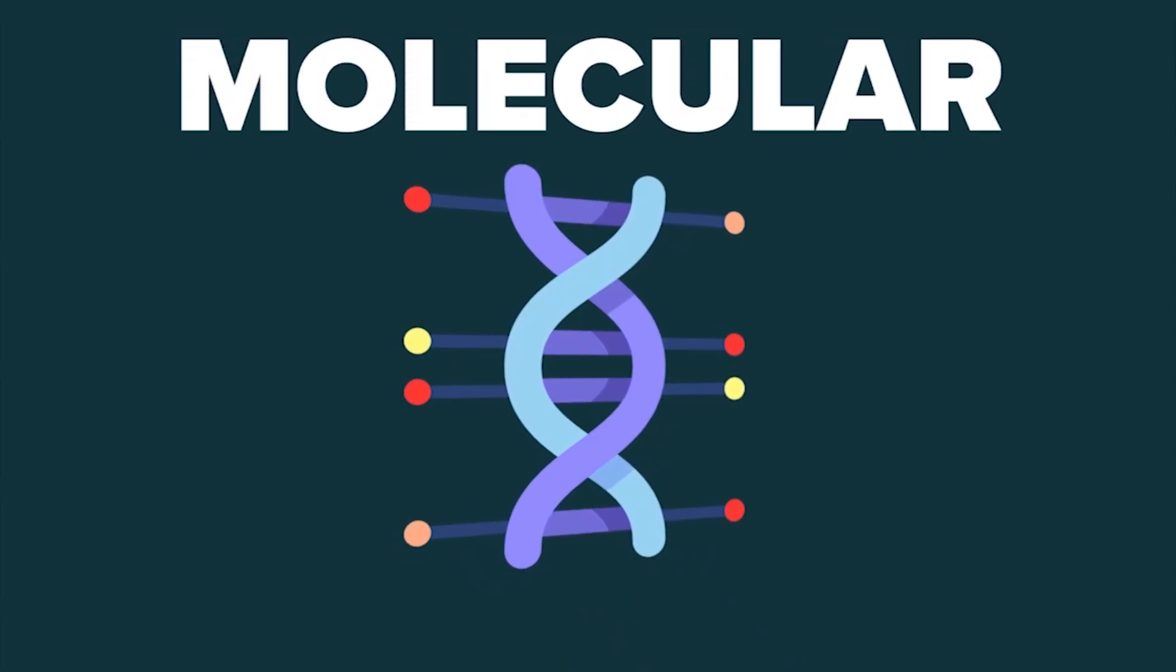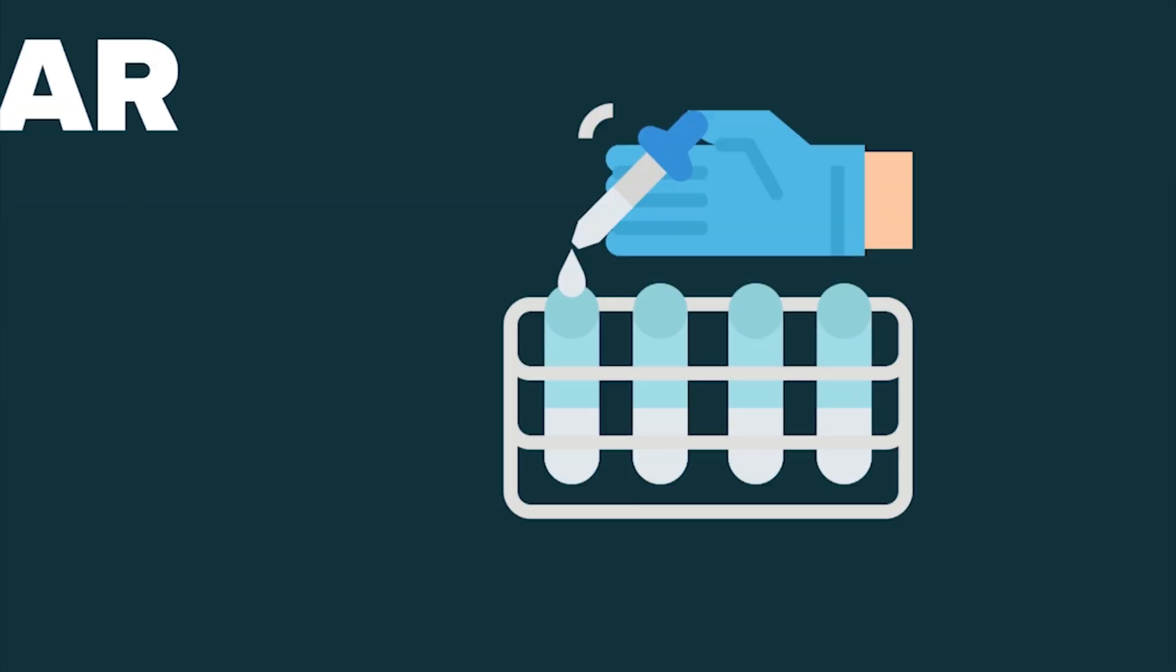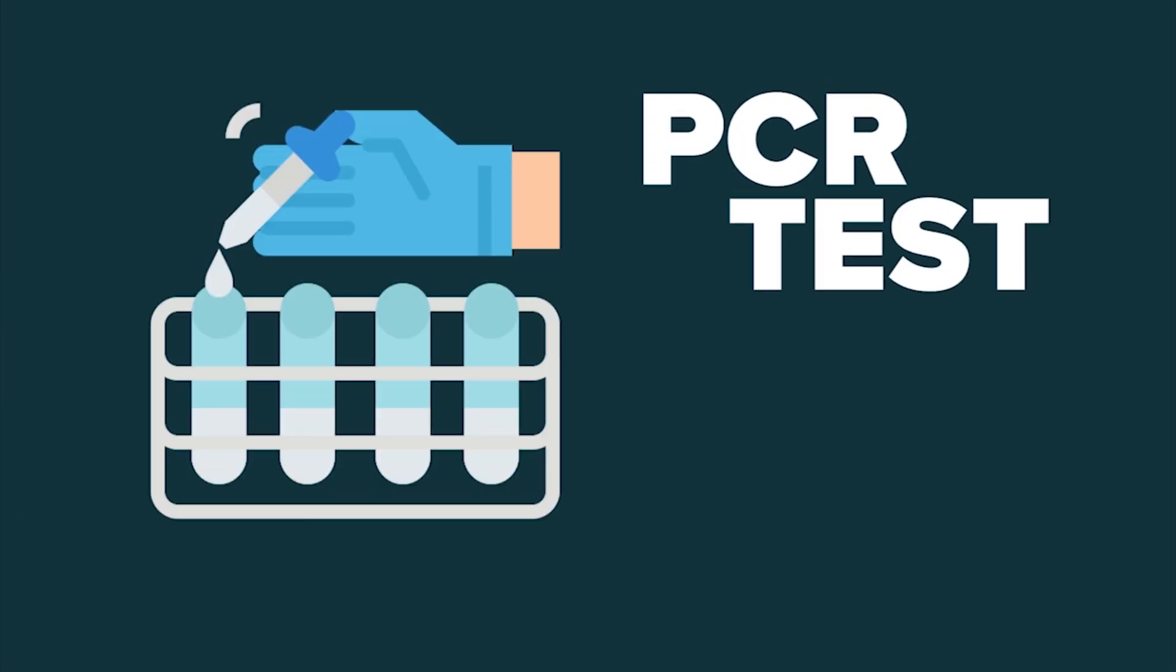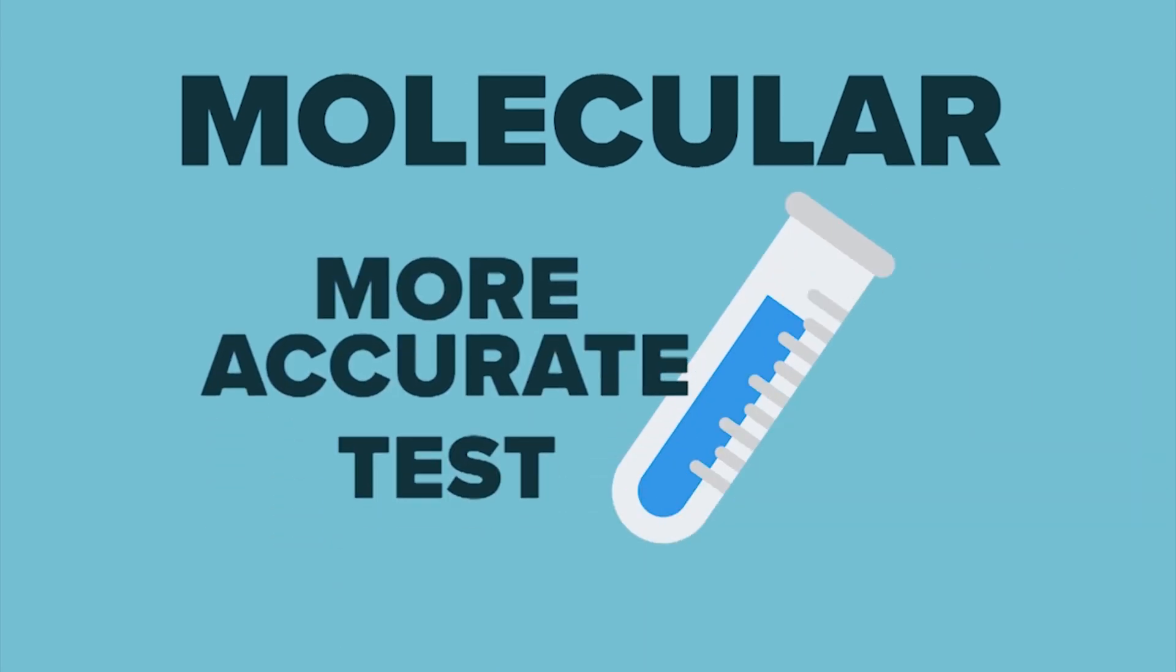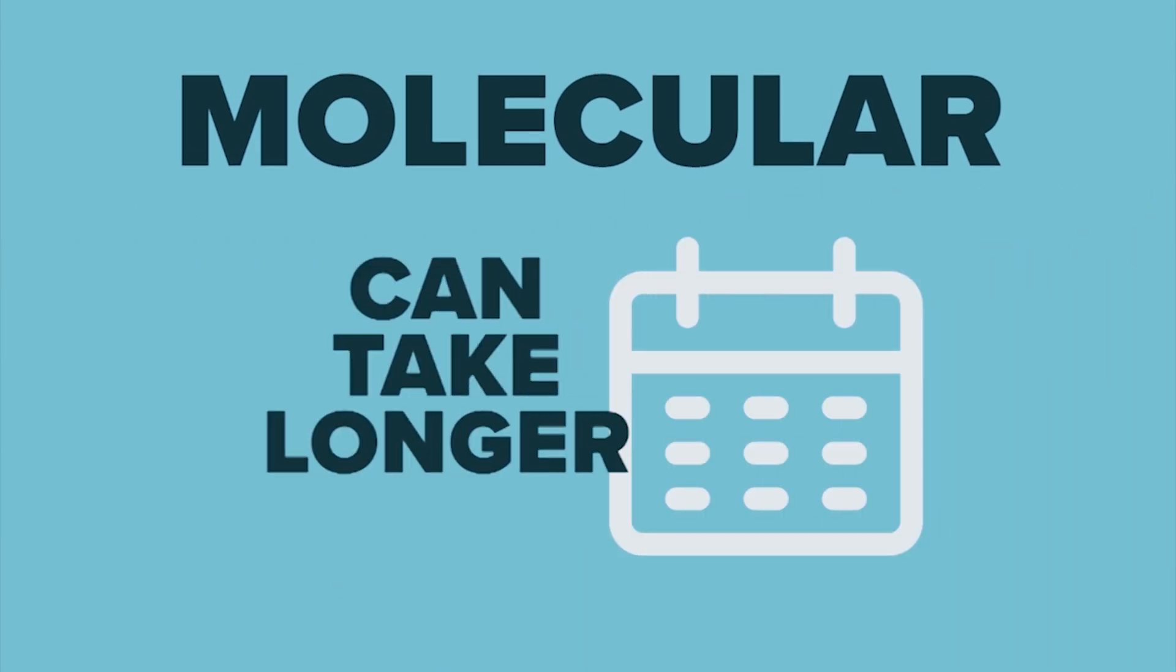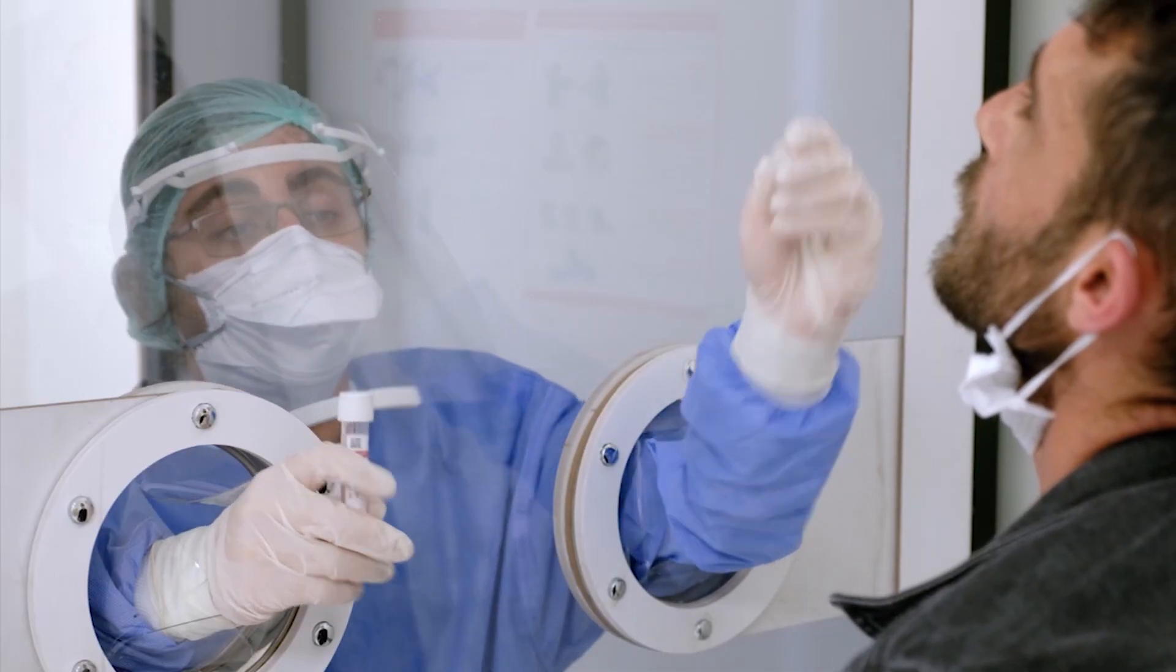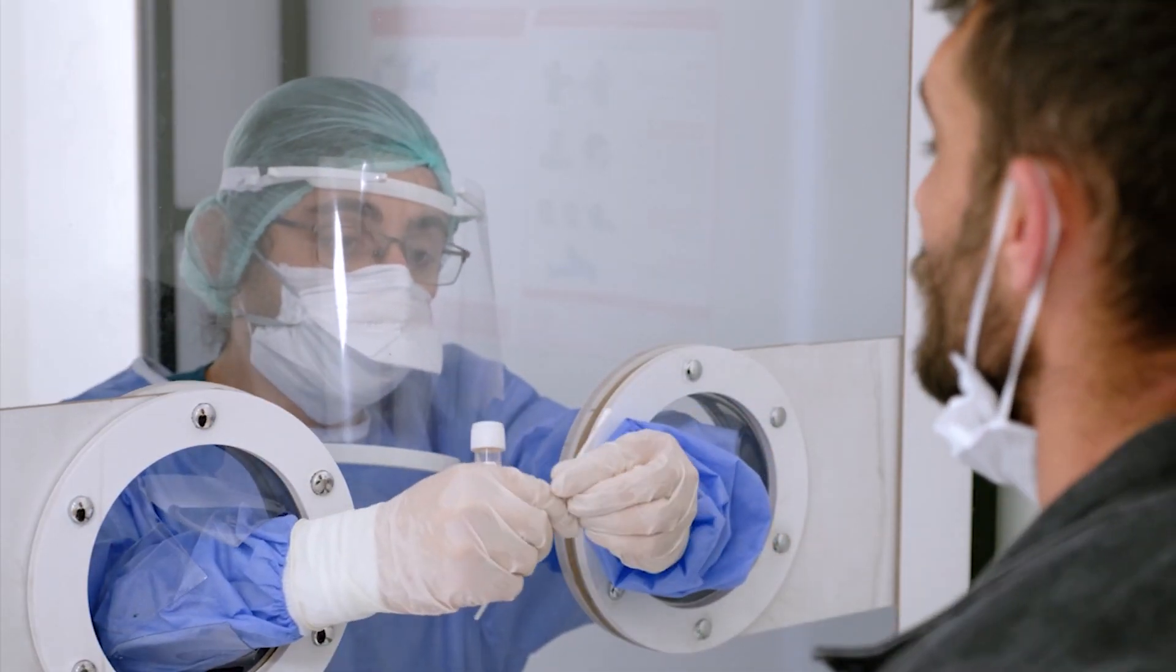The molecular test detects genetic material of the virus. It's also called a PCR test because of the lab technique that's used. The bottom line, it's the more accurate test but can sometimes take longer for the results to come back. It can be analyzed on site within minutes but sometimes that's less accurate.